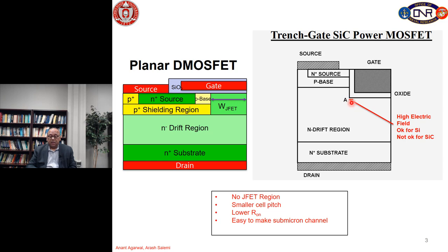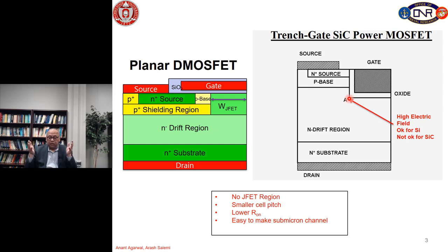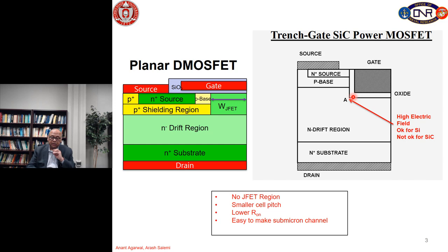The disadvantage is there is a high electric field at the trench corner, and this is not okay for silicon carbide but okay for silicon. Almost all silicon devices use the trench method because of these advantages, and they are not affected by high field at the corner. The reason is silicon's breakdown field is about 0.3 megavolt per centimeter, and even if we multiply by a factor of 3 to get the field in the oxide, it is less than 1 megavolt per centimeter for the oxide. So the oxide is pretty safe because of the lower applied field even due to the corner.